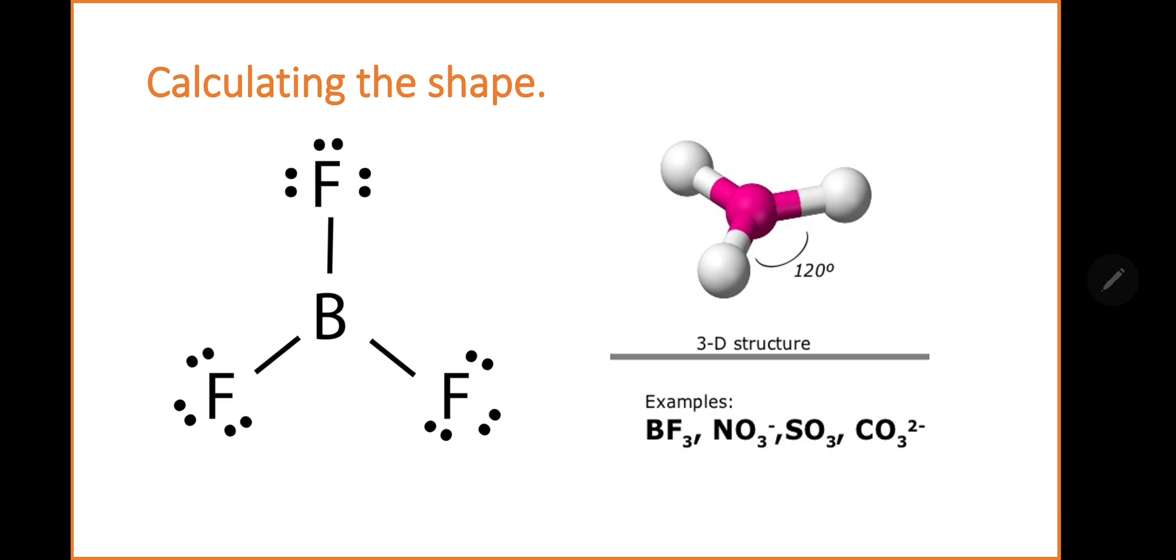Let's have a look at what the structure looks like. As you can see, there's a Lewis diagram and there is a normal diagram of this. There's a bond angle there of 120 degrees. There's a 3D structure, as we'd say.